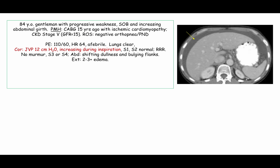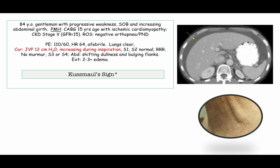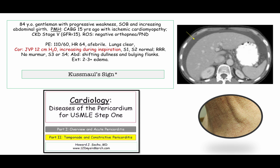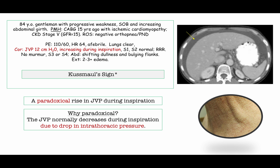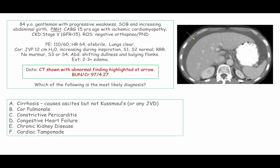Getting back to the question, we have an elevation in the jugular venous pressure that increases during inspiration. That is the punchline of this whole question. Rising jugular venous pressure during inspiration is the definition of Kussmaul's sign — one of the key physical exam features you need to be familiar with. Kussmaul's is defined by a paradoxical rise in the jugular venous pressure during inspiration. It is paradoxical because the jugular venous pressure should fall during inspiration, due to a decrease in intrathoracic pressure.